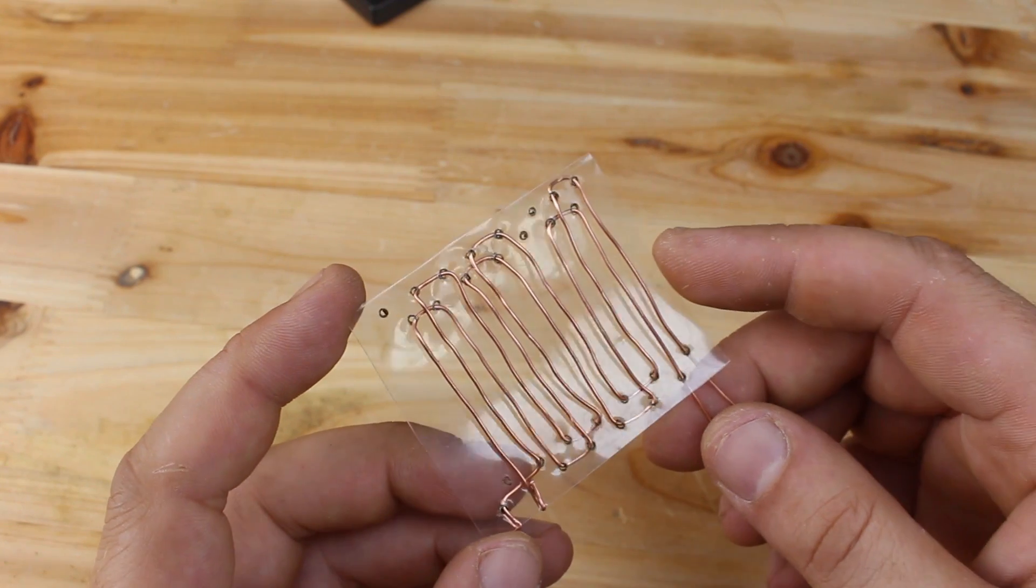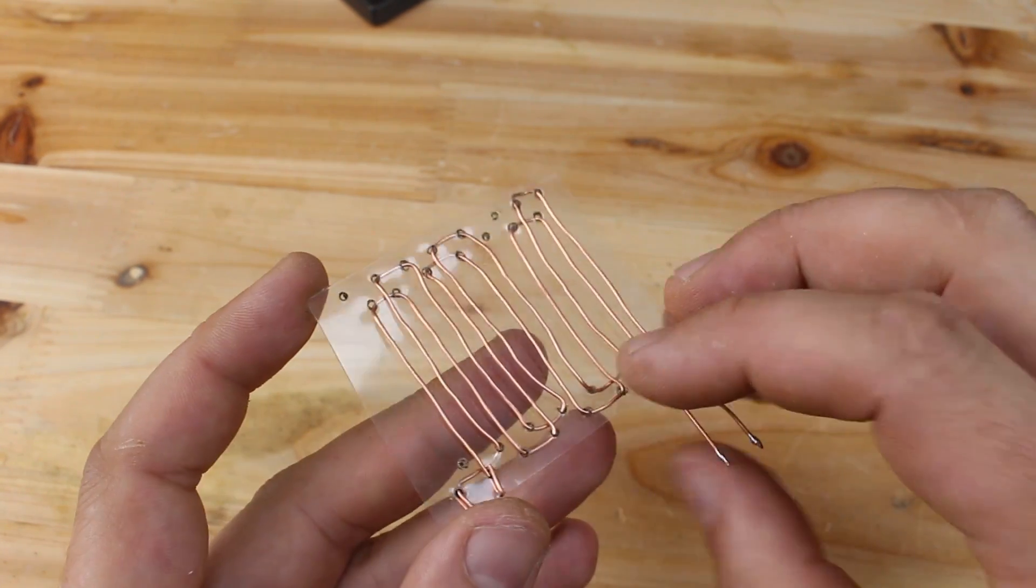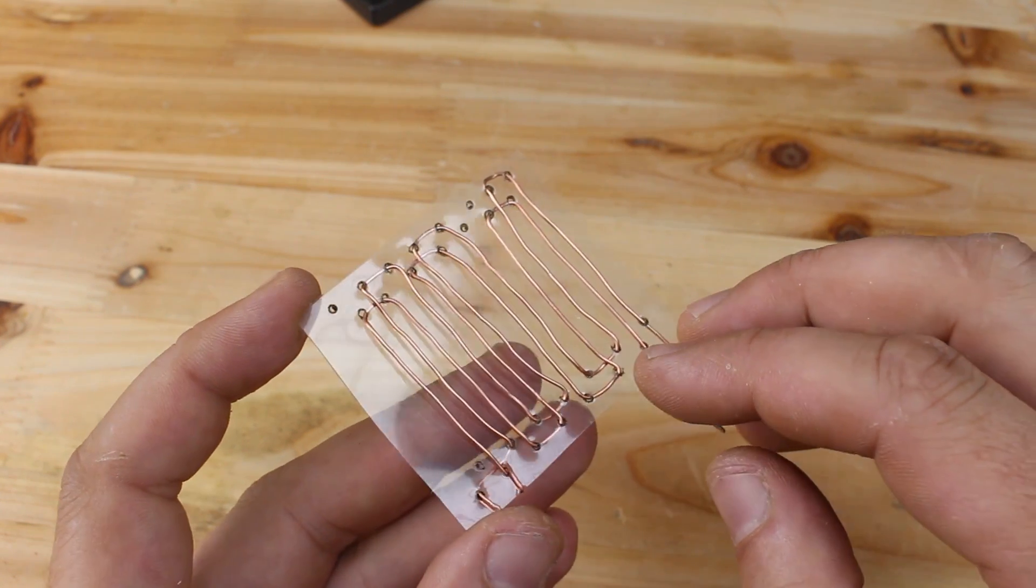As you can see, the contact sensor for rain is finished and is made from two copper wires who don't touch each other.